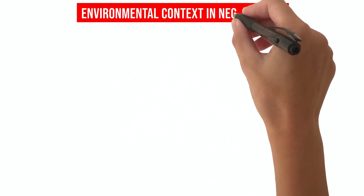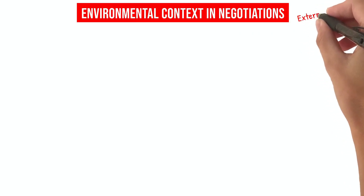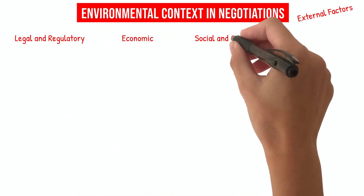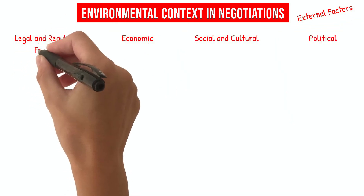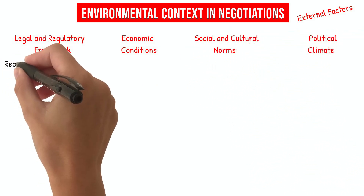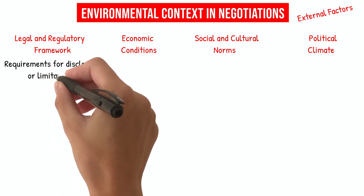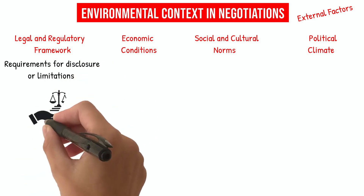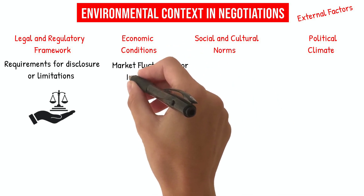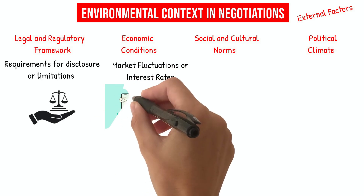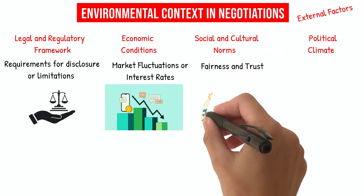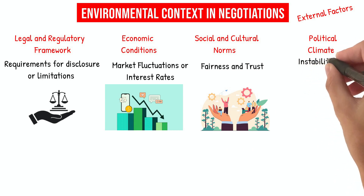Environmental Context in Negotiations. The environmental context of negotiation refers to the external factors that can influence the negotiation process and outcome. Several factors can impact negotiations in the environmental context, including the legal and regulatory framework, economic conditions, social and cultural norms, and political climate. The legal and regulatory framework can set the rules and boundaries for negotiations, such as requirements for disclosure or limitations on certain types of agreements. Economic conditions, such as market fluctuations or interest rates, can also impact negotiations by affecting the perceived value of the goods or services being negotiated. Social and cultural norms can influence negotiations by shaping attitudes toward fairness and trust, while the political climate can create instability or uncertainty.